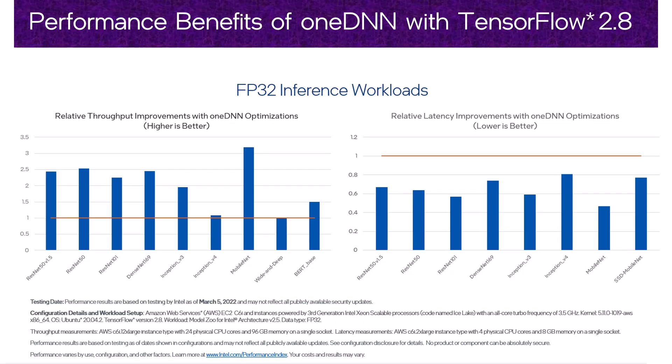As you can see on the screen, OneDNN's optimized version of TensorFlow achieves up to three-fold throughput improvement and up to 50% reduction in latency for various deep learning models.